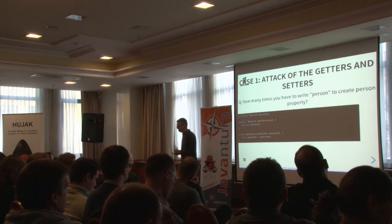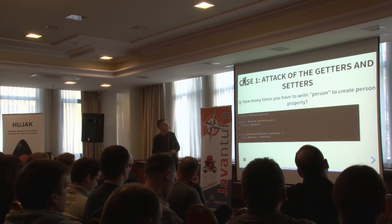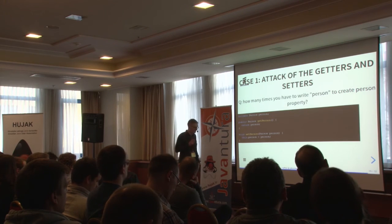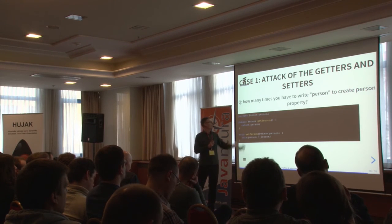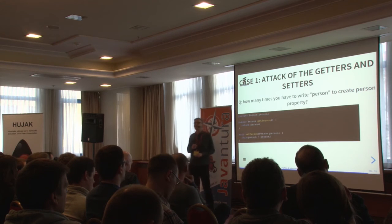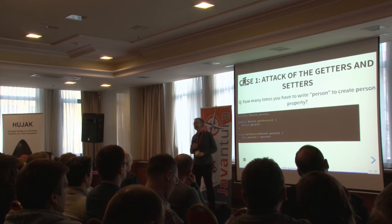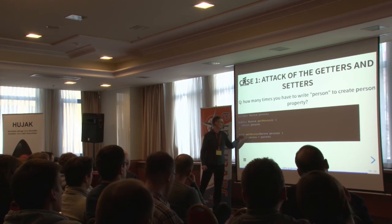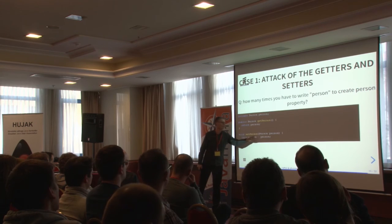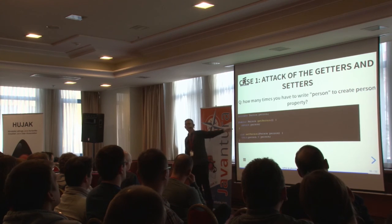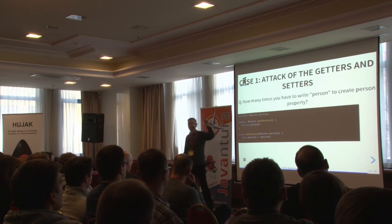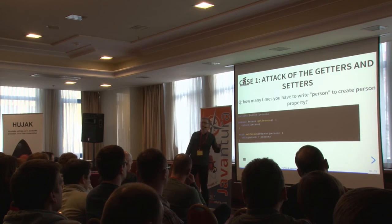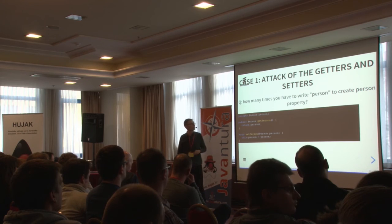There's one thing left unanswered from the beginning: how many times do you have to write 'person' to create a Person property in a Java class? Whoever said ten was right: one, two, three, four, five, six, seven, eight, nine, ten times. In Kotlin you just write var person: Person — two times — and you are instantly five times more productive.